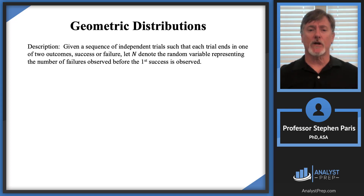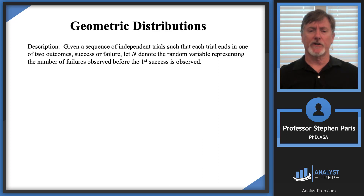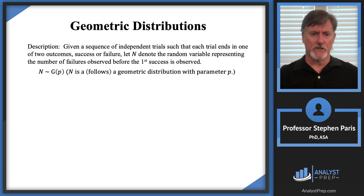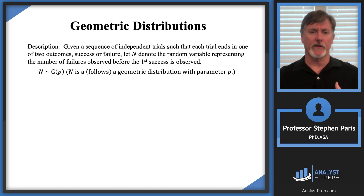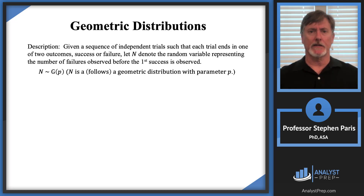Let's say we're given a sequence of independent trials such that each trial ends in either a success or a failure. We're going to let capital N be the random variable that counts the number of failures observed before we see the first success. The notation we're going to use is N ~ G(P), a geometric distribution with parameter P. That parameter P is going to be the probability of a success.